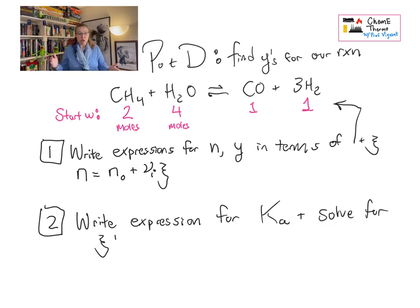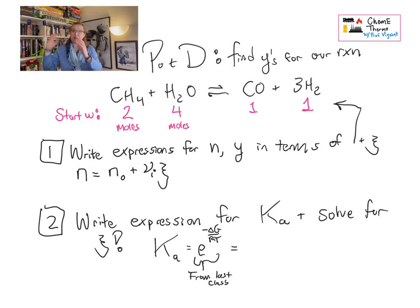Okay, and then item two, take all of that together and write your expression for Ka, and if you can, solve it. So you're going to go back and get your delta G from last time. You're going to put that together and have that equilibrium constant, and you're going to set that equilibrium constant equal to this expression that you've developed that has xi etc. in it. And then after you've written that out, we're going to spend some time reflecting on what you learned from that, what that tells you, where that's going.